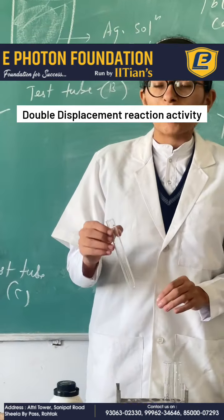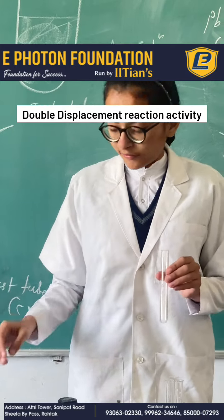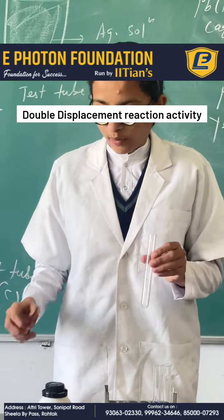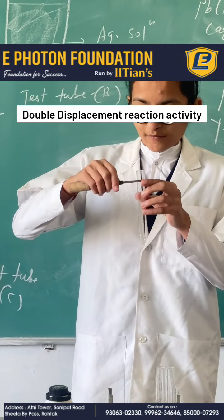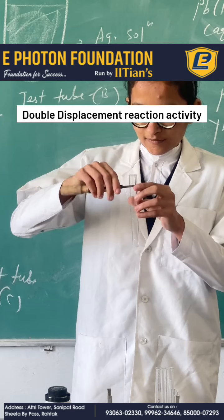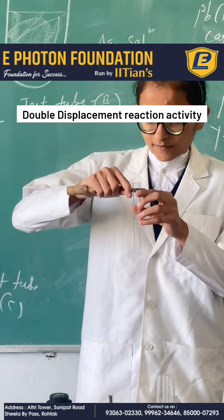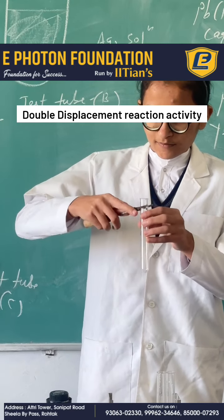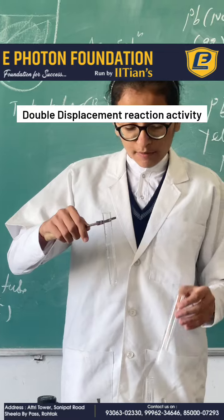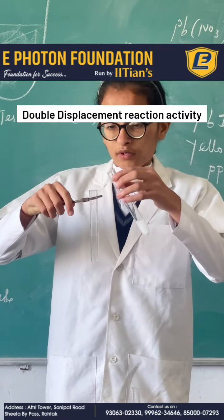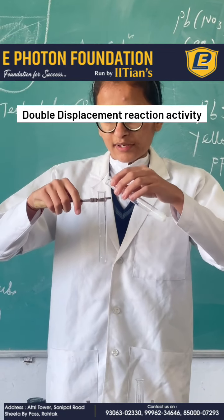Now take another test tube C and hold it with the help of a test tube holder. Now add some amount of potassium iodide. Thank you.